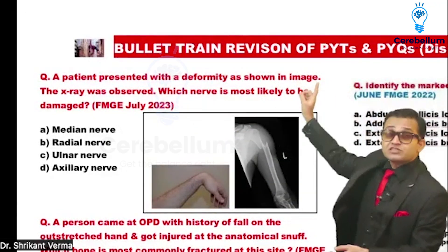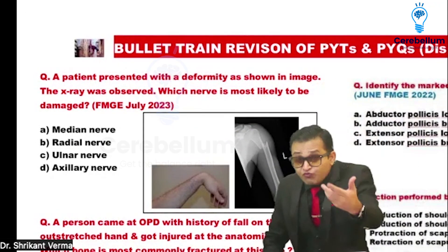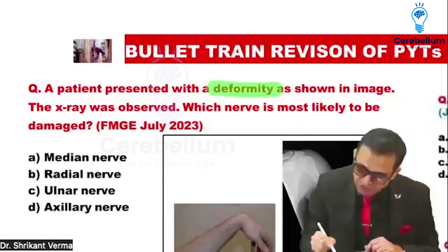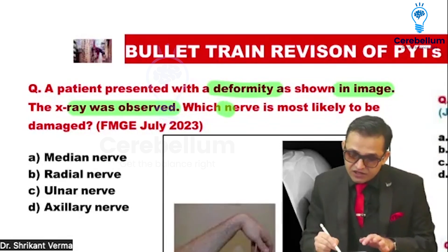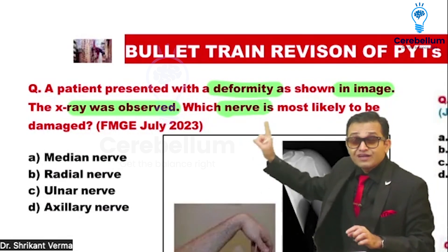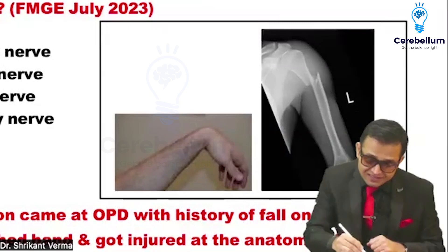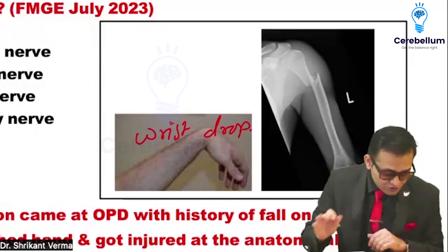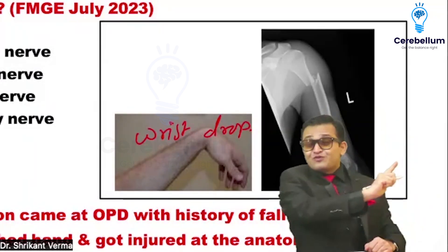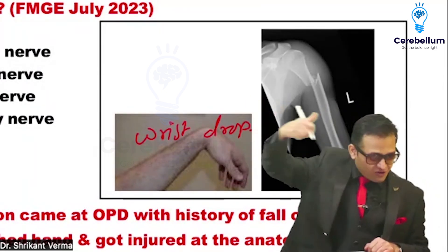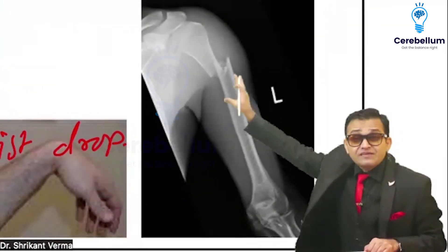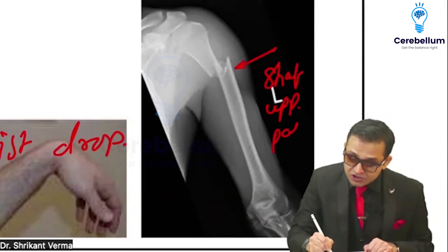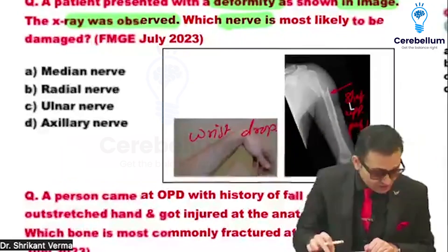Let's start the bullet trend revision of previous topics and PYQs. In FMG July 2023, a deformity shown in an X-ray image was observed — which nerve is involved? This is wrist drop. The fracture is in the upper part of the shaft of the humerus, and the answer is the radial nerve.